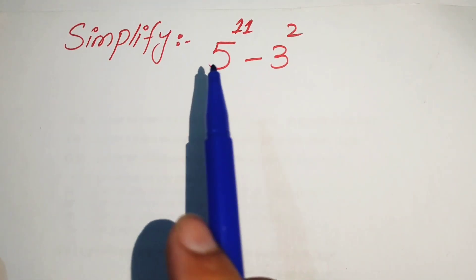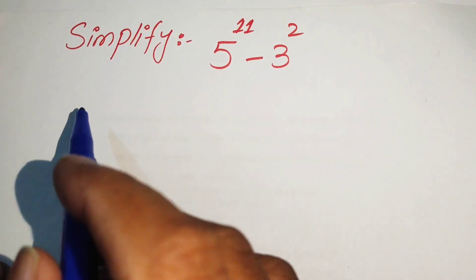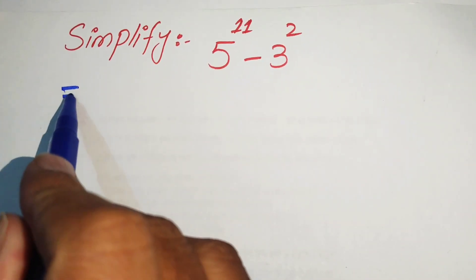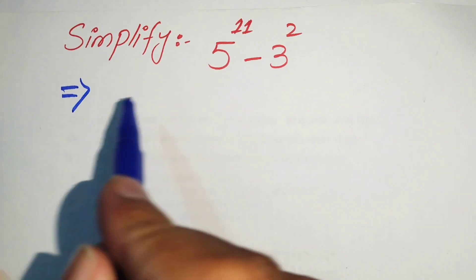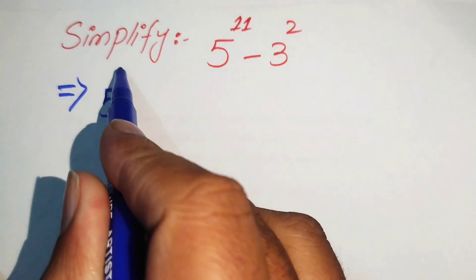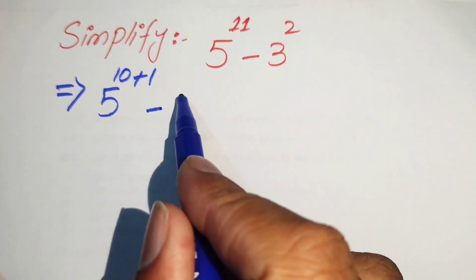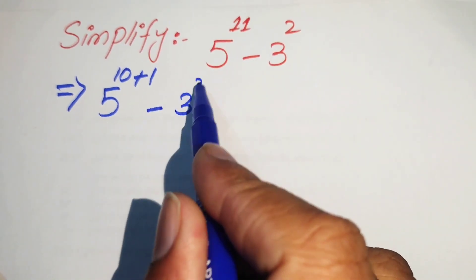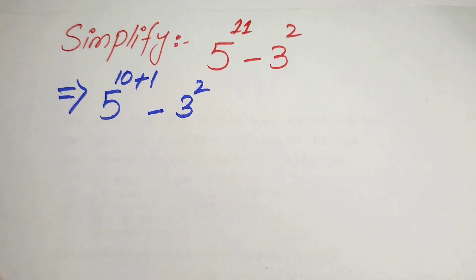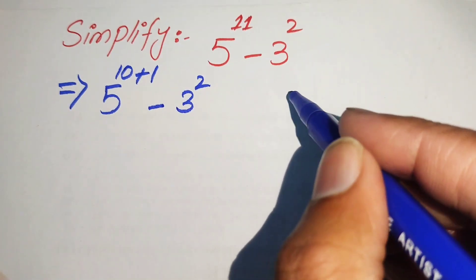We write this into simplified form. First, we rewrite the expression — 5 to the power of 11 is written as 5 to the power of 10 plus 1, minus 3 squared.